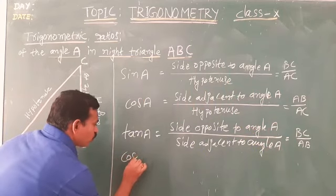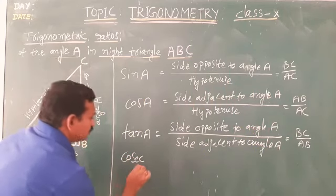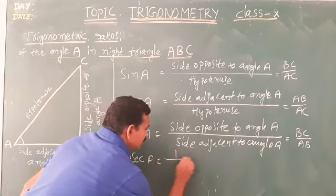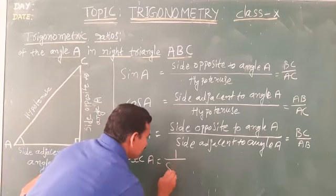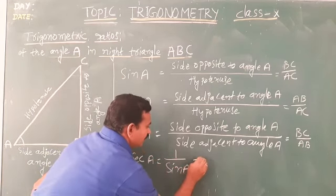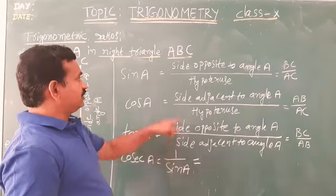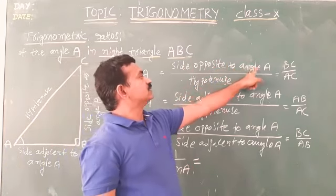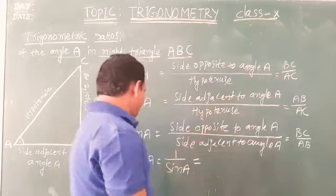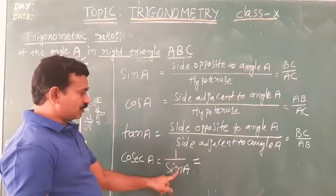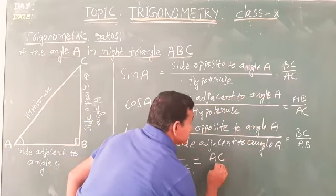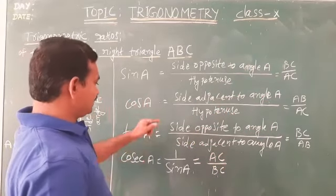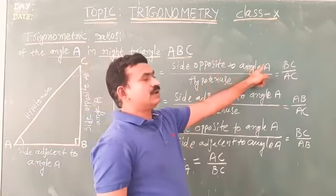Cosecant A is the reciprocal of sin A, that means 1 by sin A. So cosecant A equals hypotenuse divided by the side opposite to angle A, which in this triangle is AC by BC.